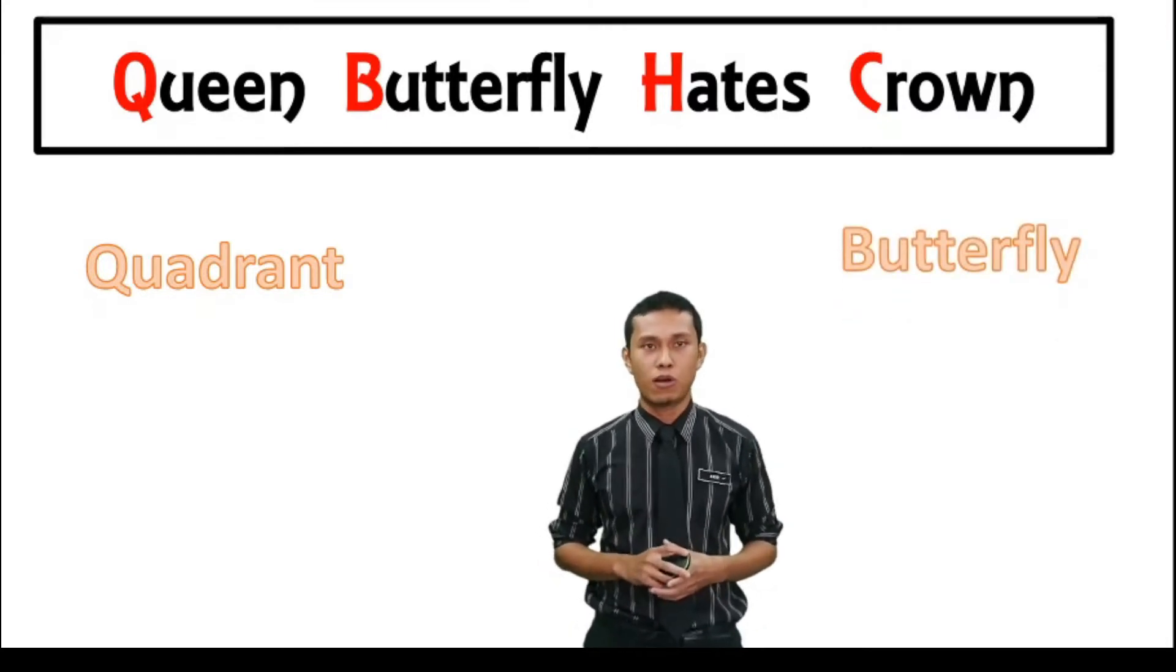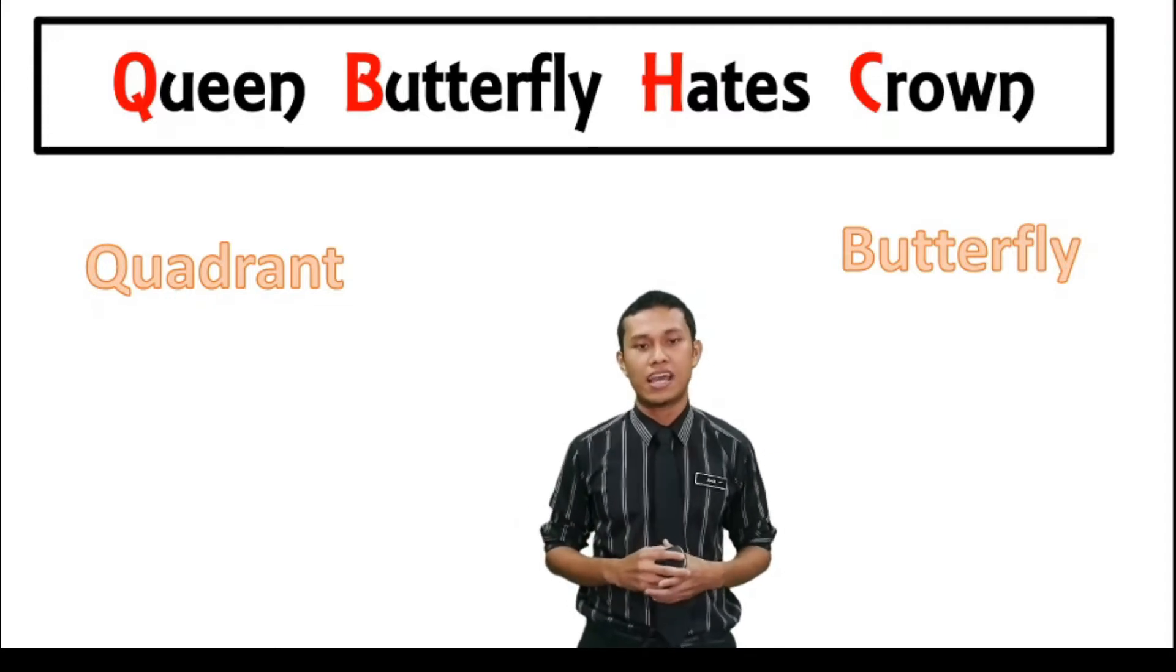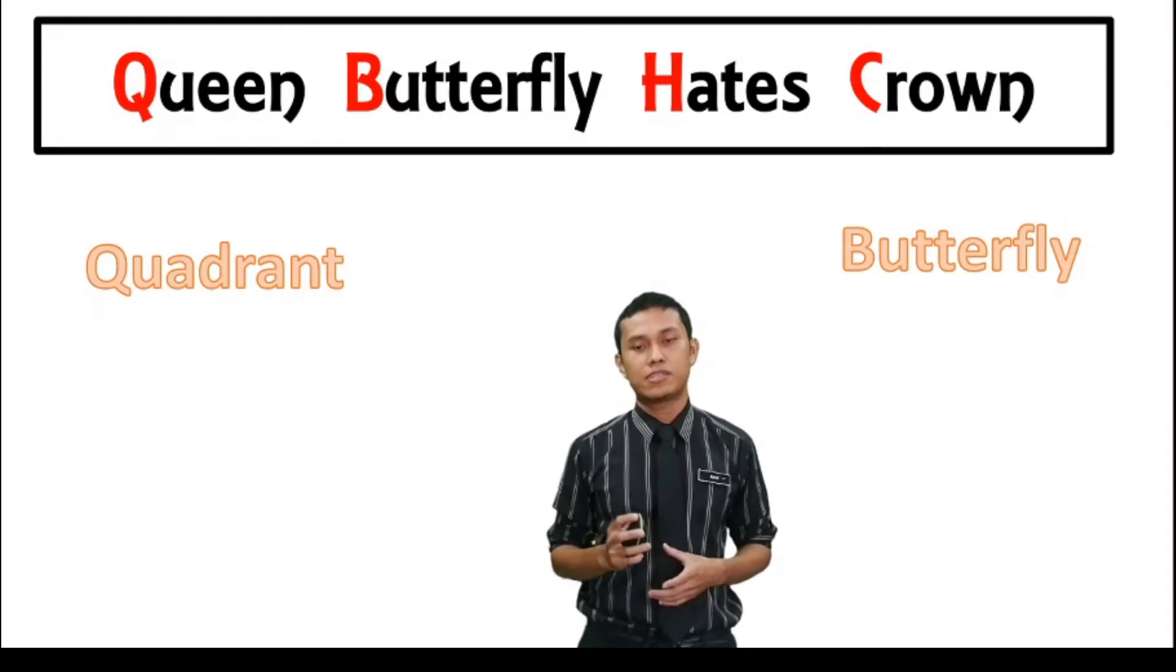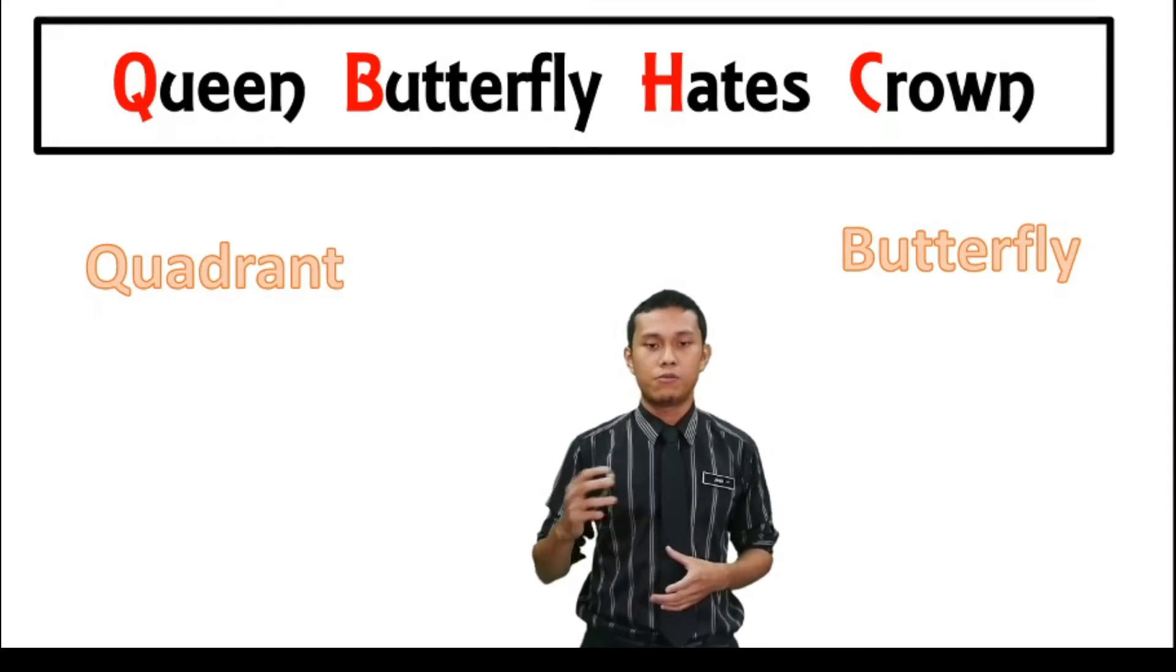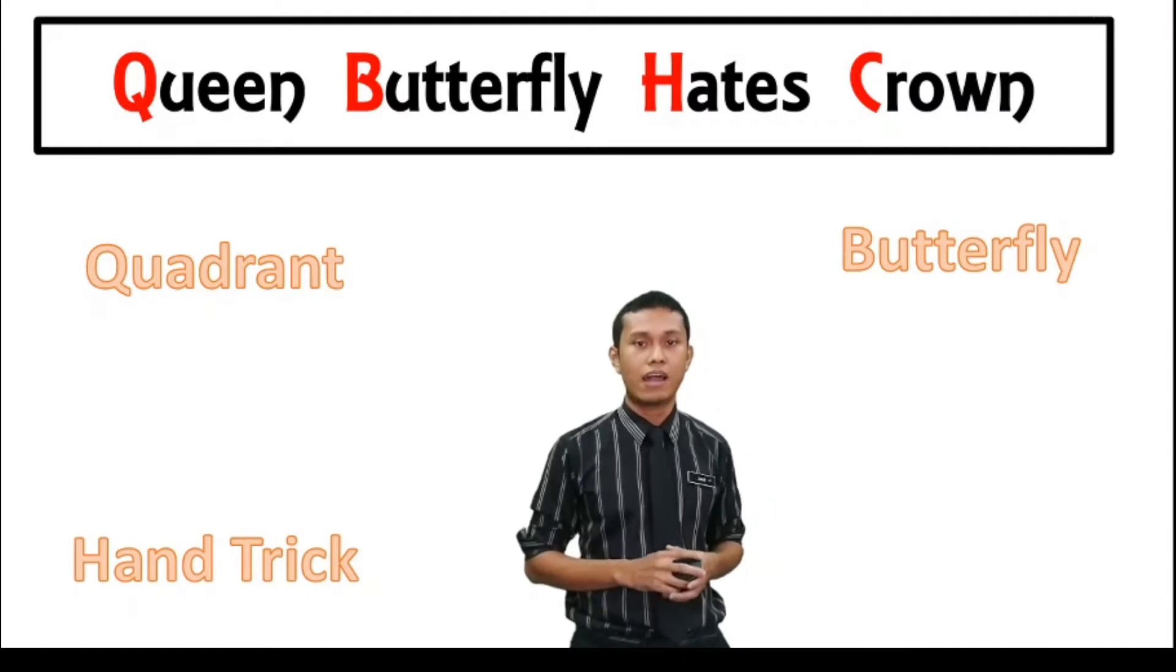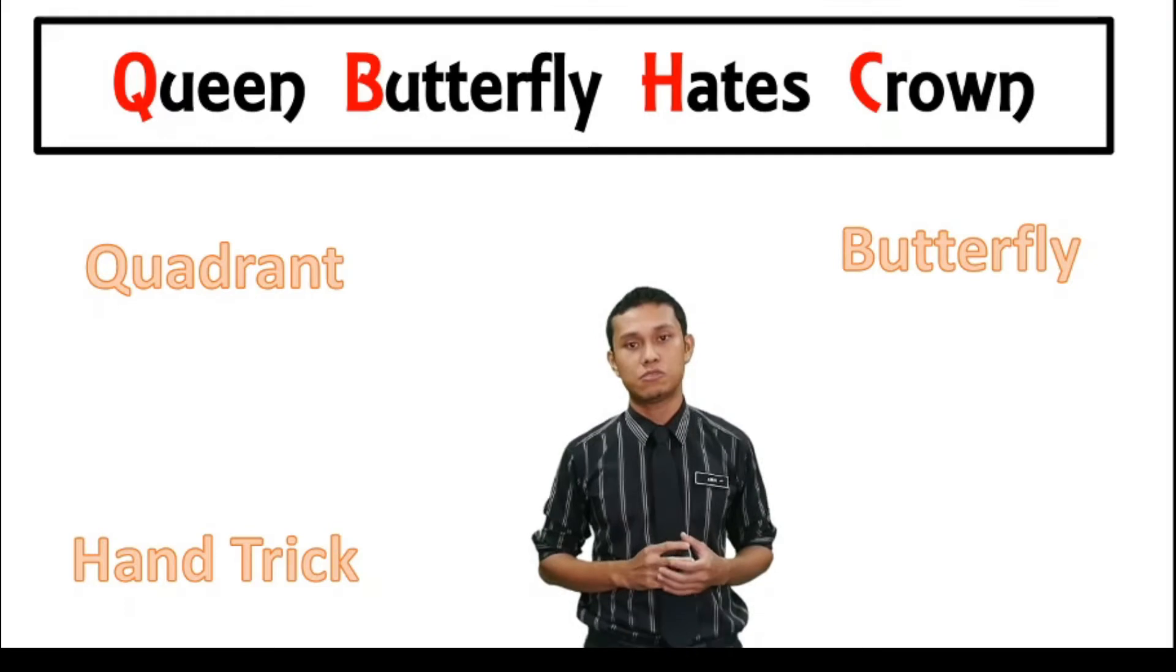Second one is to draw butterfly, which we will go in deeper in our next example. And after we have our butterfly, then we need to apply the hand trick. So hand trick here will help us to find the value of the acute angle given in question.